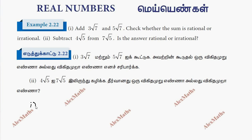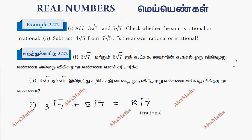In the first part, we will add 3 root 7 plus 5 root 7. This total is 8 root 7. This is irrational.